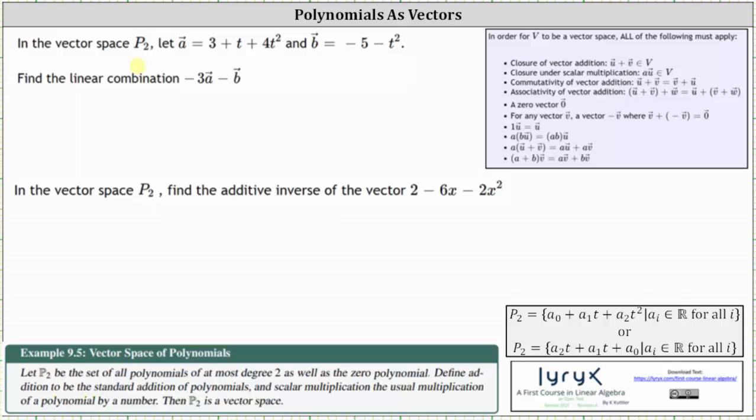If we take a look at our notes below, let P2 be the set of all polynomials of at most degree 2, as well as the zero polynomial, defined with addition to be the standard addition of polynomials, and scalar multiplication the usual multiplication of a polynomial by a number. Then P2 is a vector space.